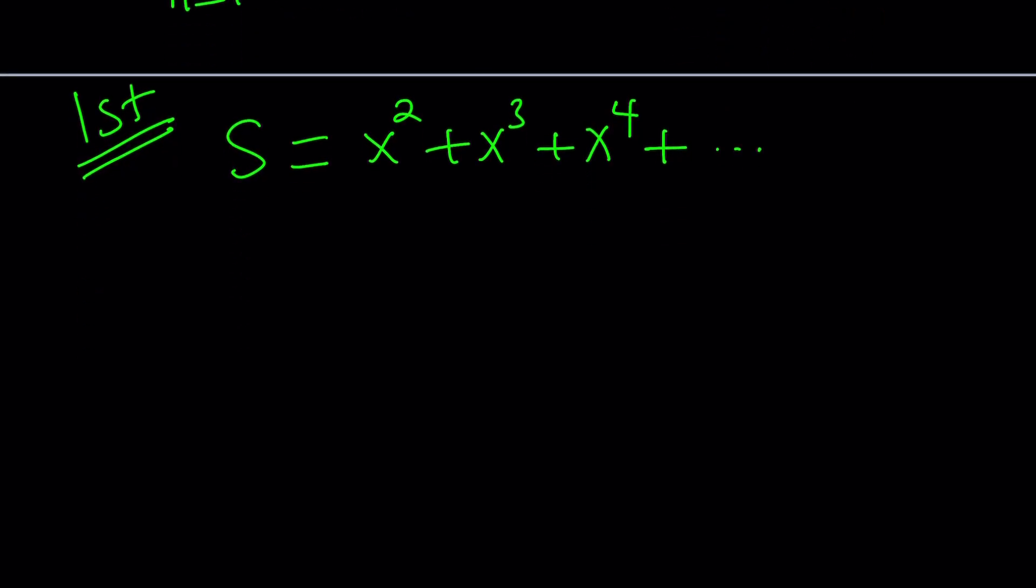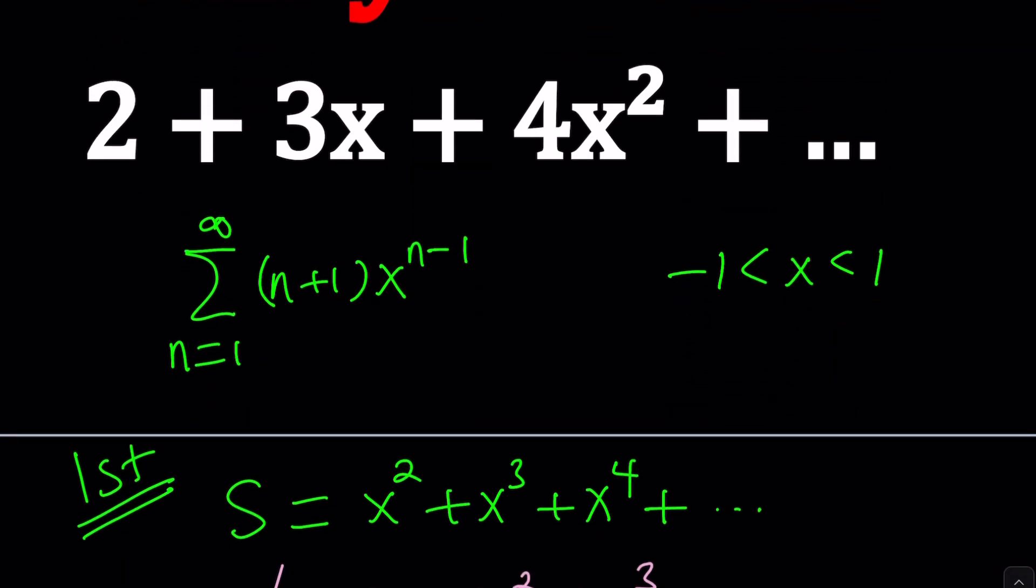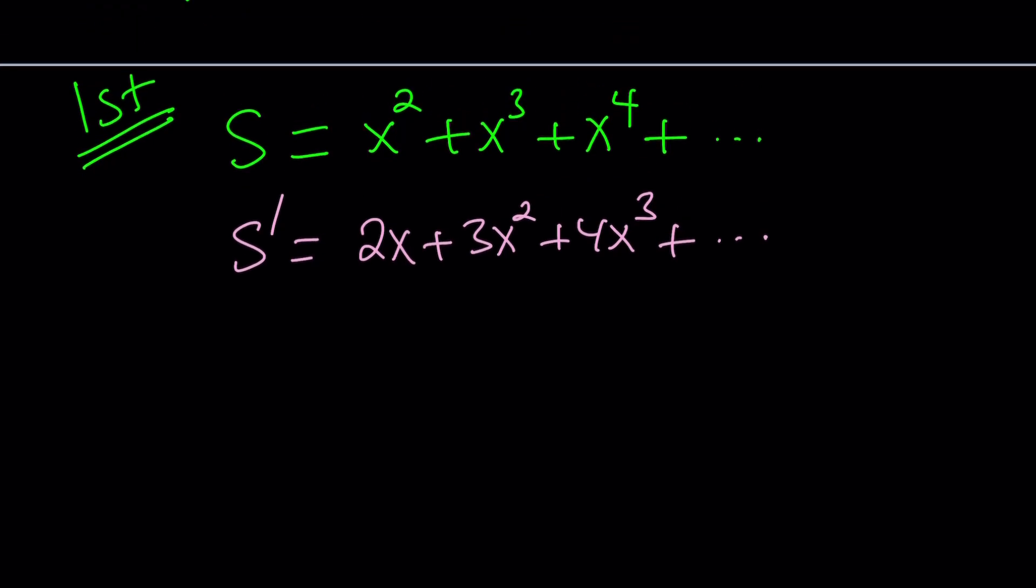So I want to differentiate this expression. When I differentiate S, I get from the derivative of x squared 2x and then 3x squared and then 4x cubed. You might be asking, what does this have to do with our sum? But take a look at it. When I differentiated S, I got 2x plus 3x squared. And look at the sum we're looking for. It's 2 plus 3x plus 4x squared. Do you see the connection?